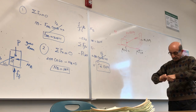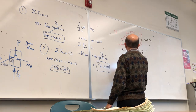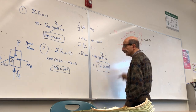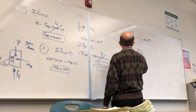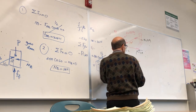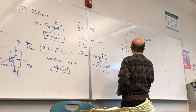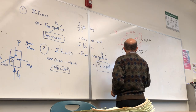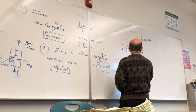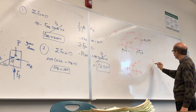Drawing the free body diagrams: for the crate, the cable pulls at 30 degrees, crate potentially moves forward, so friction at C (mu times NC) acts backward. The weight is 1500 Newton. For the man, if he slips backward, the friction at his shoes acts forward. The man's weight is 800 Newton.